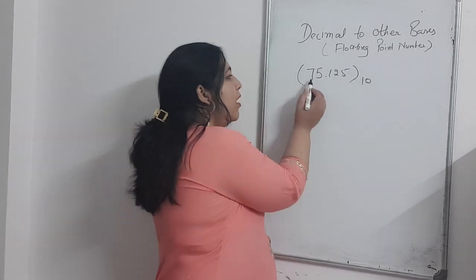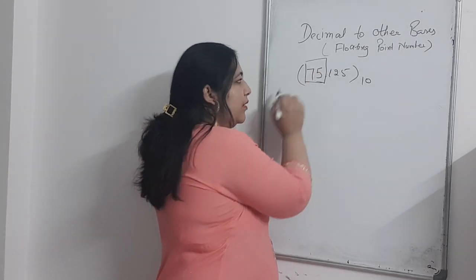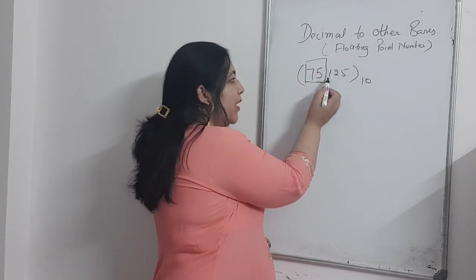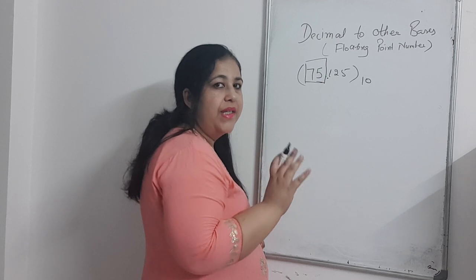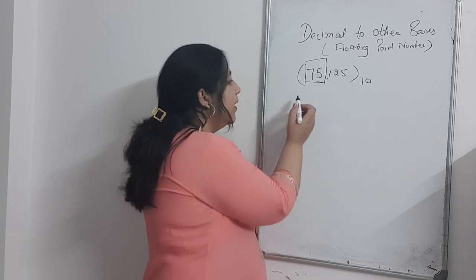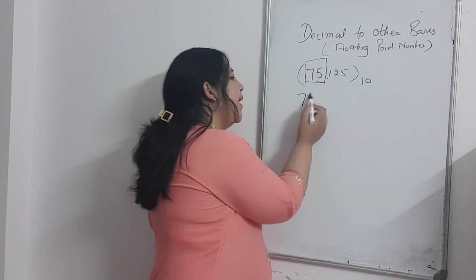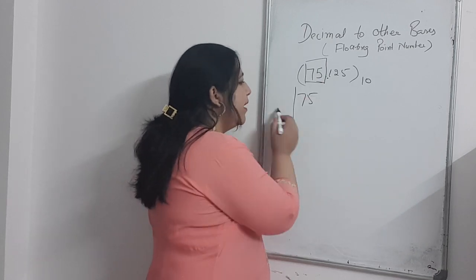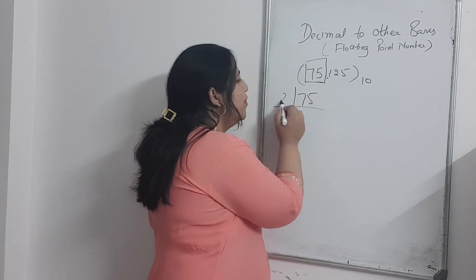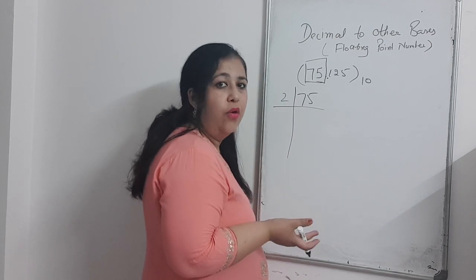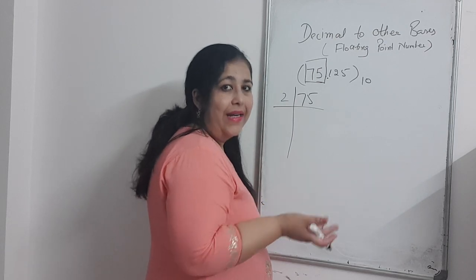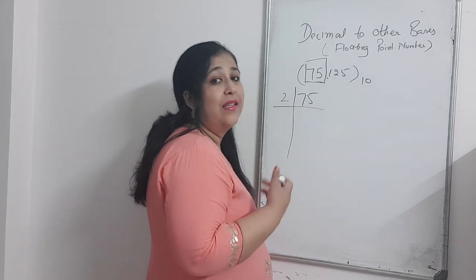The integer part is the one that sits on the left side of the decimal point. To convert it to binary, you divide by 2. To convert to octal, you divide by 8, and for hexadecimal, you divide by 16.